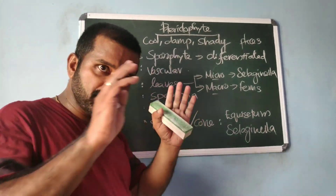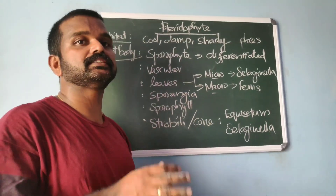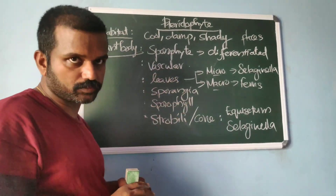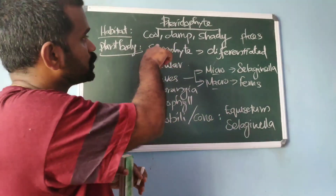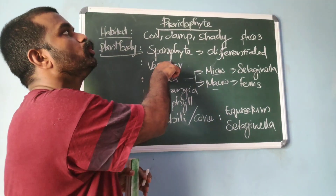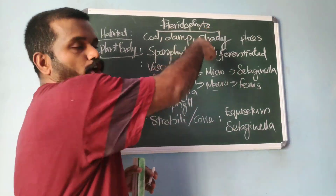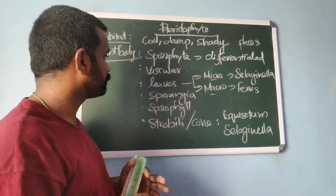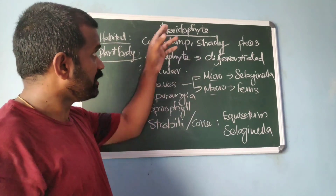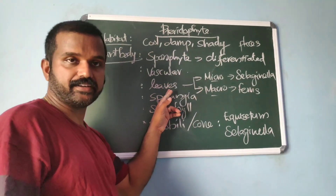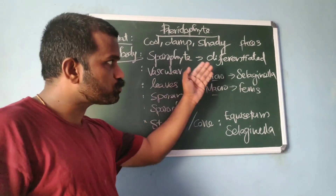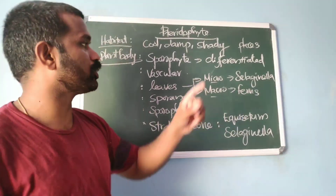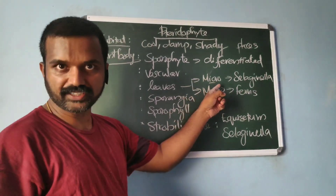The sporophyte is well differentiated into a true root, true stem and true leaf. All of these organs possess vascular tissues. Since they possess vascular tissue, pteridophytes are also known as vascular cryptogams.